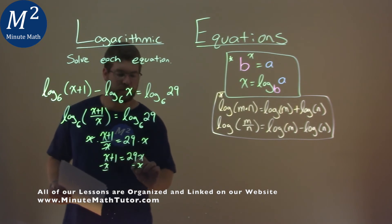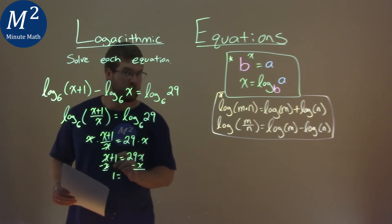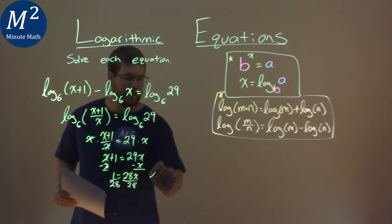Subtract x from both sides and we have 1 now is equal to 29 minus 1, which is 28x. Don't forget that. Now we divide both sides by 28, and we have x by itself here.